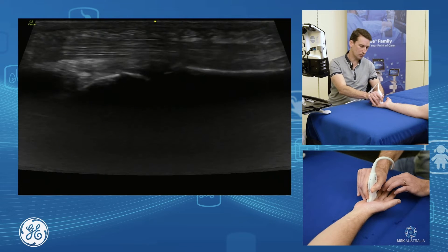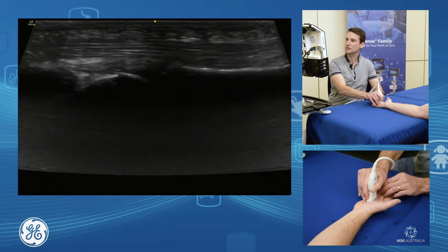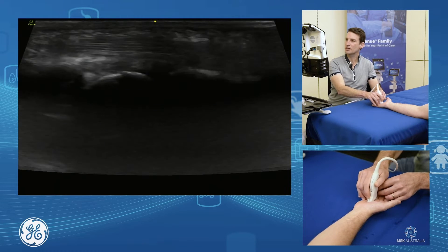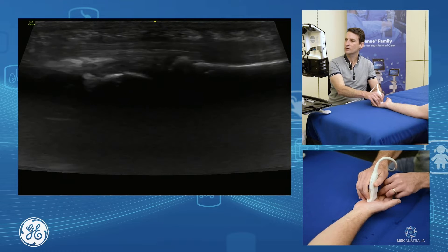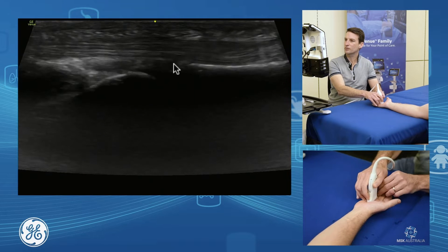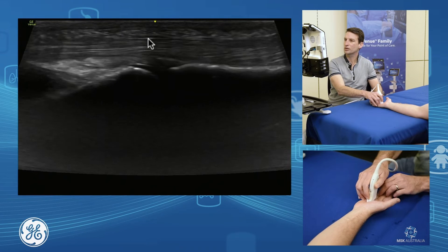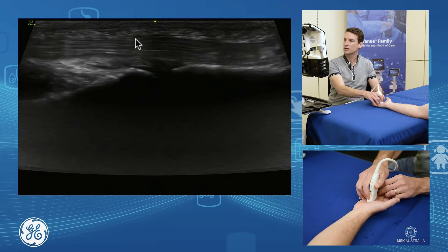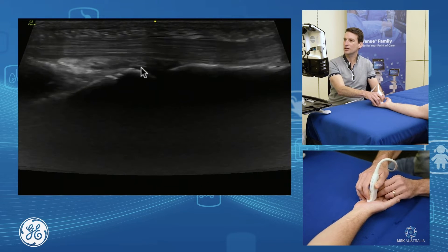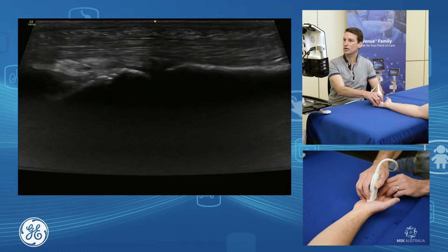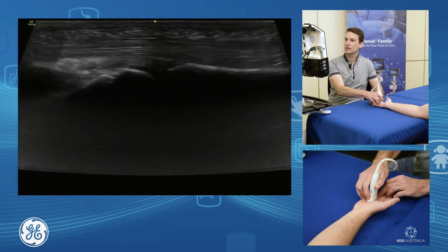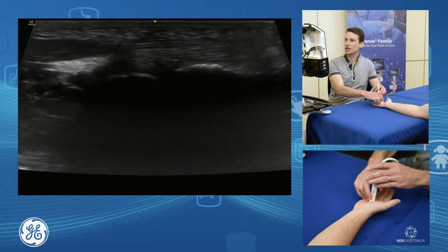This is going to be our common spot for our trigger fingers. We can open that up along the long axis and see that tendon gliding through that pulley really nicely. And this is where we will do our trigger finger injection.